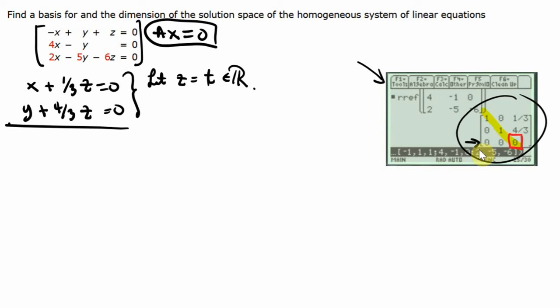Looking at these two equations, they both have Z in them. I'm going to replace Z with T. The first equation is X plus one-third T equals zero, so X equals negative one-third T. The second equation is Y plus four-thirds T equals zero, which implies Y equals negative four-thirds T.